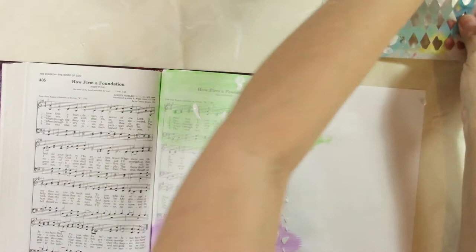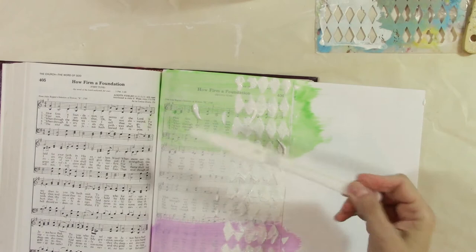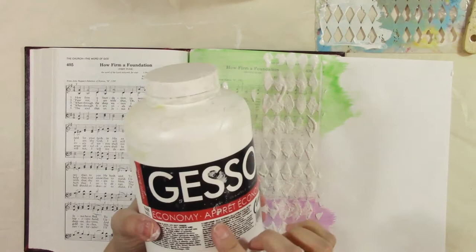You can just use a plastic tool. So this is the gesso I used to put on the page at first. I just dipped my brush in there and watered it down just a little tiny bit.